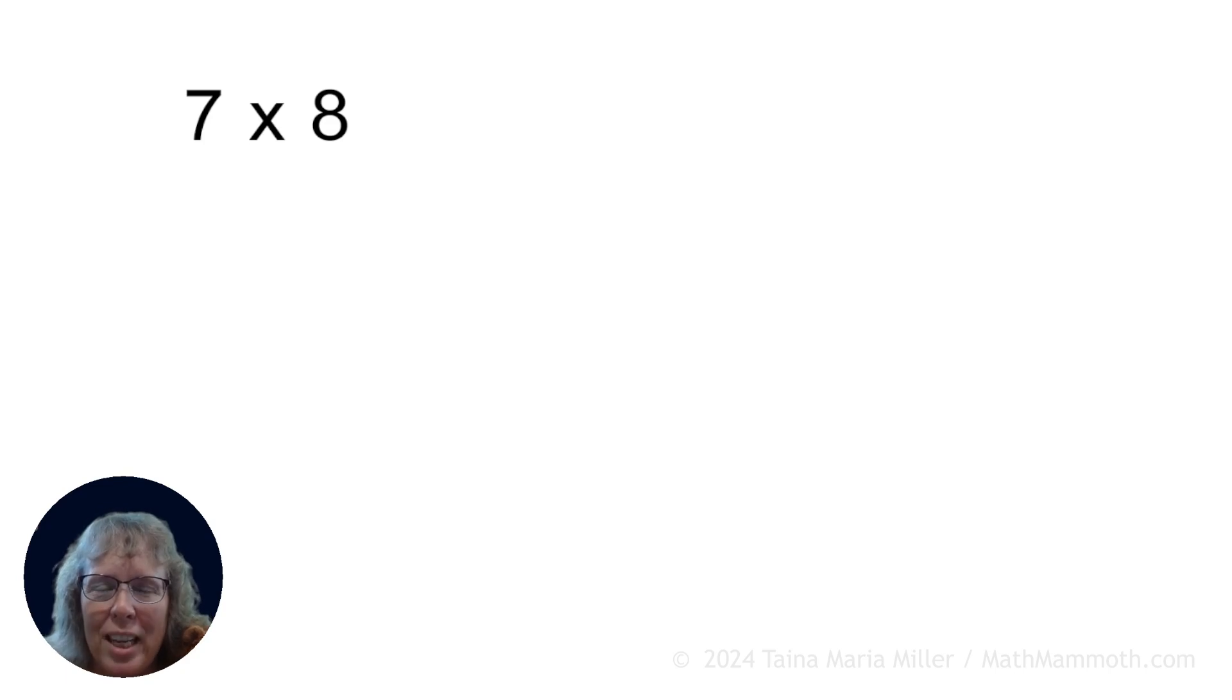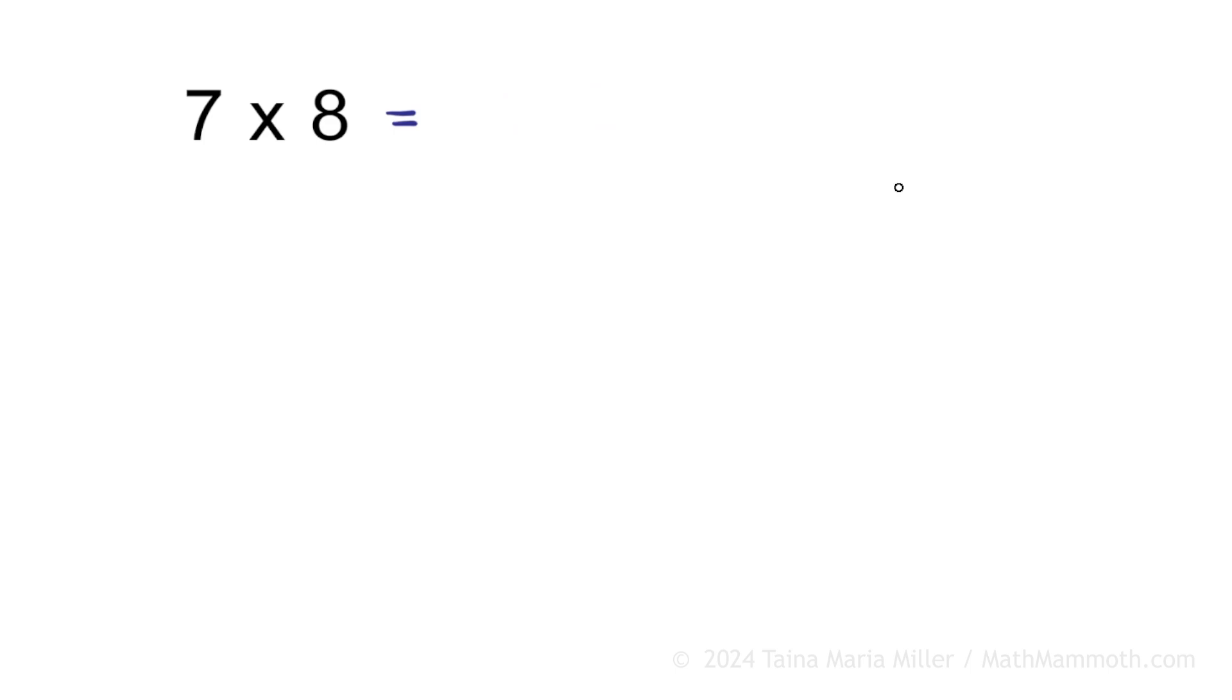Now let's look at 7 × 8 and break it down into two multiplications, or into two parts, two partial products. How? Mathie has an idea. I have an idea. You may have an idea. It can be done in many different ways. You could look at it as 3 × 8 + 4 × 8. But it's also 2 × 8 and 5 × 8. And many other ways that you could break it down.